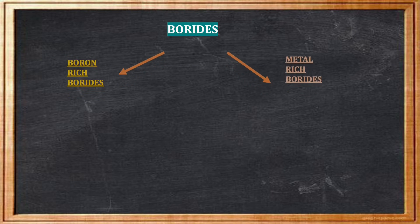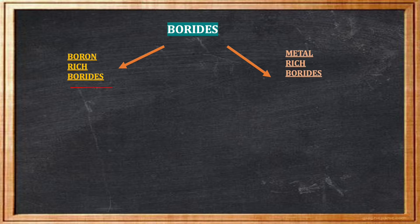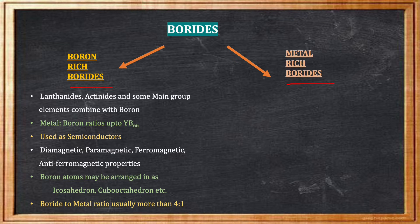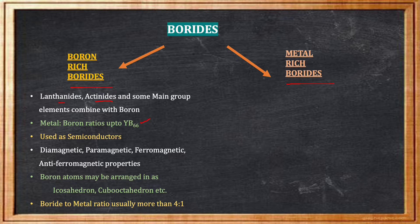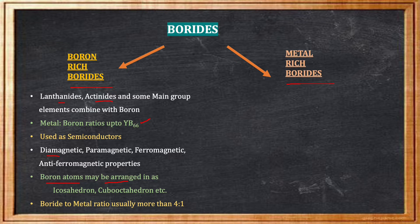Borides are of two types: boron-rich borides and metal-rich borides. Boron-rich borides are usually combinations of boron with lanthanides, actinides, and some main group elements. The metal to boron ratios can be up to 1:66, as seen in YB66. They are generally used as semiconductors, having properties like diamagnetic, paramagnetic, ferromagnetic, and antiferromagnetic. Boron atoms may be arranged in an icosahedron or cuboctahedron, with a boride-to-metal ratio usually greater than 4:1.